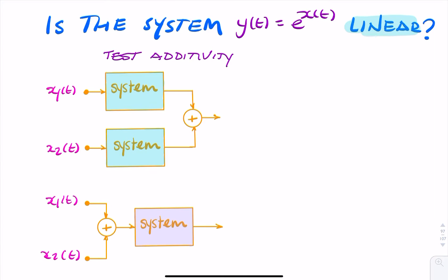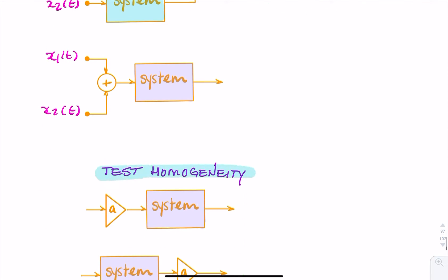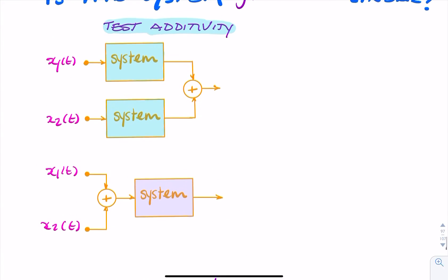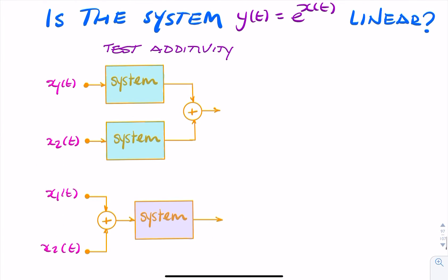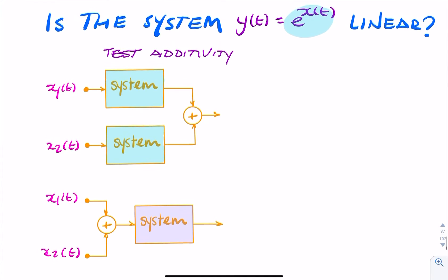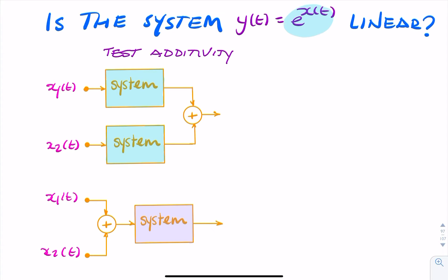To check if a system is linear, we have two tests. We first test if the system is additive, and then we test if it's homogeneous. So we test additivity and we test scaling. In this example, we're given a system y(t) equals e to the power x(t). That's my system.